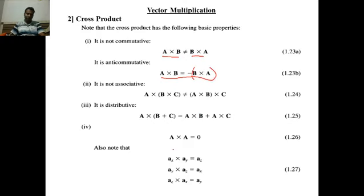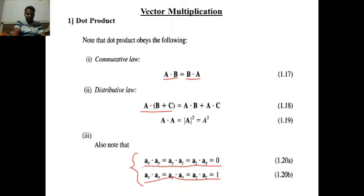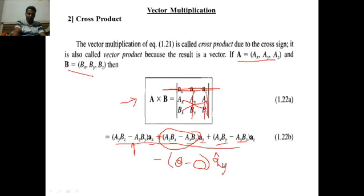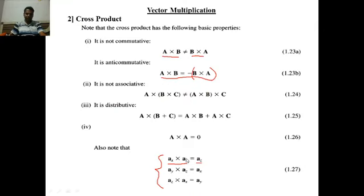A very important thing to note in cross product: the cross product of different unit vectors gives the next (remaining) unit vector, but the cross product of same unit vectors is always zero. For example, AX-cap cross AX-cap is always zero, and AY-cap cross AY-cap is always zero. In contrast, for dot product, the dot product of same unit vectors is always 1, but the dot product of different unit vectors is always 0. So cross product of different unit vectors is non-zero, while cross product of same unit vectors is always zero.